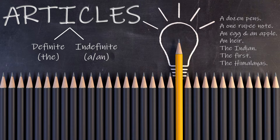'A' is used before words starting with a consonant. 'An' is used before words which are starting with a vowel. Examples: a dozen pens, a one rupee note, an egg, an apple, an ear.